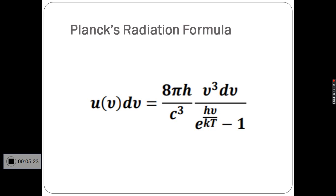He derived an equation for the energy density in the cavity in the frequency interval between ν and ν + dν, given by u(ν)dν = (8πh/c³) × (ν³dν)/(e^(hν/kT) - 1). This is called Planck's radiation formula in terms of frequency.